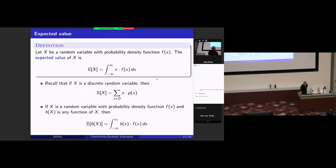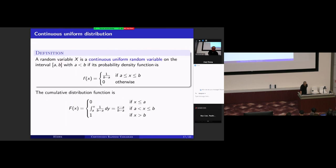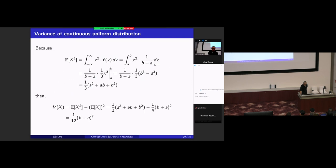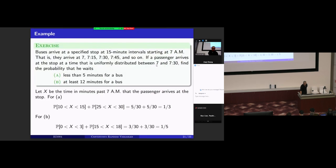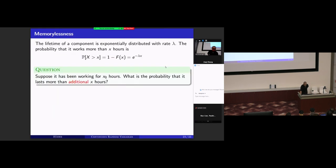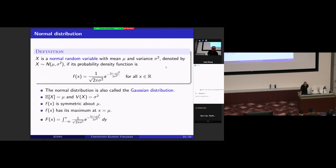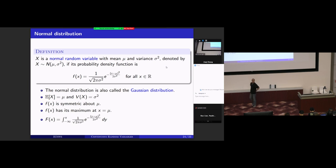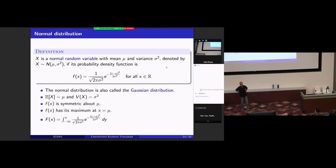We also introduced the expected value of a continuous random variable, and certain distributions: uniform distribution and exponential. This time I will wrap up this topic and discuss the normal distribution. I think most of you know this distribution — I would say it is the most important distribution, at least in statistics.